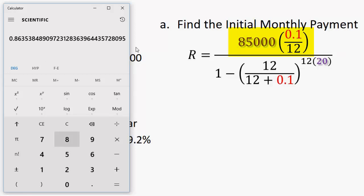So I'm going to have 8500 times 0.1 divided by 12 equals, and that's my numerator, and I'm going to divide that value by what I saved in my memory. That's equal to 820.268, and so on.